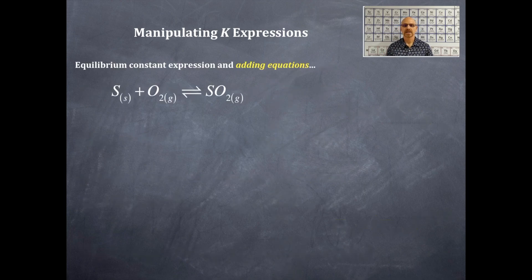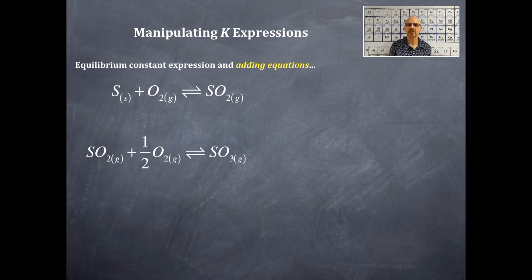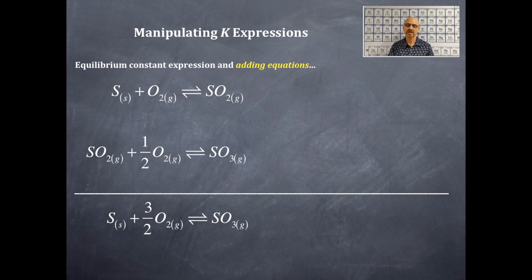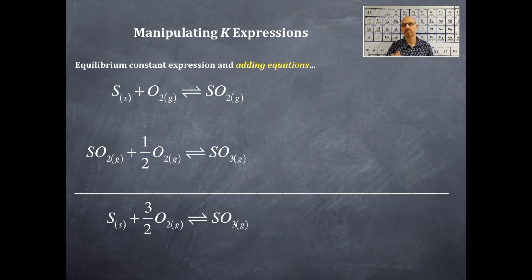Now we're going to add equations. We have the original equation and we're adding a second equation. When we add them, sulfur dioxide appears on the product side of equation 1 and the reactant side of equation 2, so it cancels out. What remains is sulfur on the reactant side, oxygen combining from both equations (1 + ½ = three-halves), and sulfur trioxide as the product.